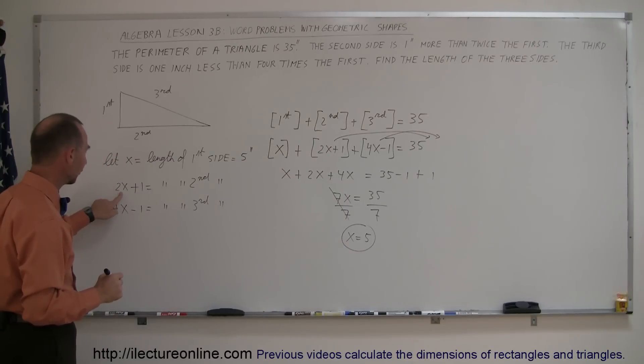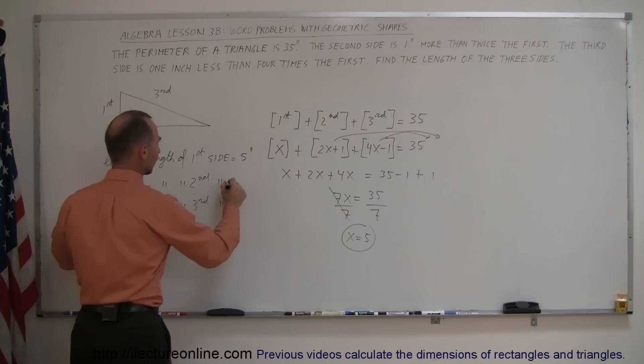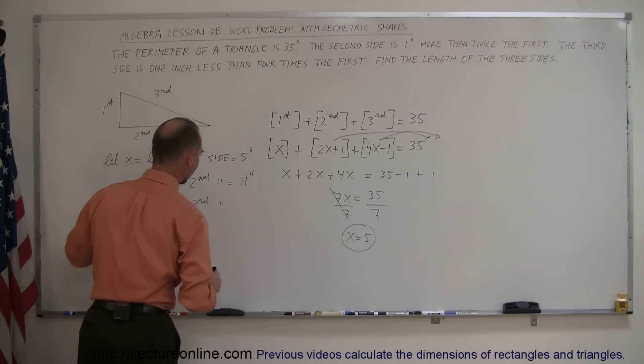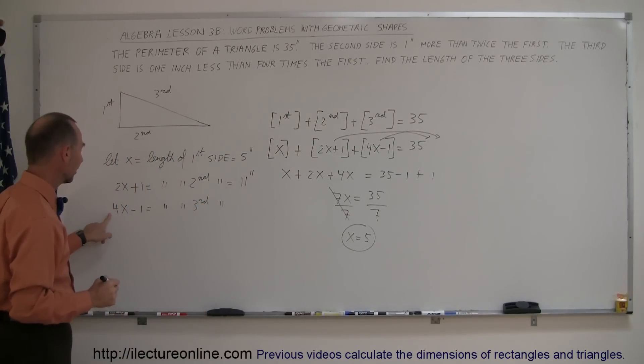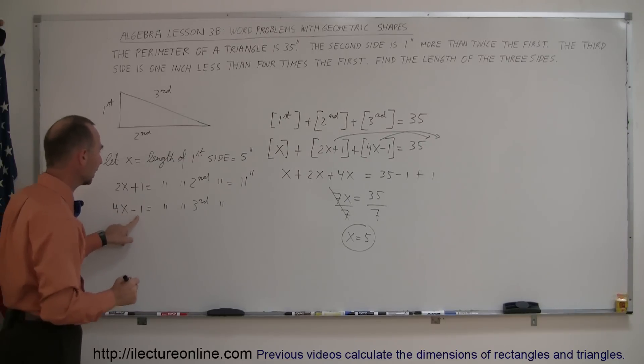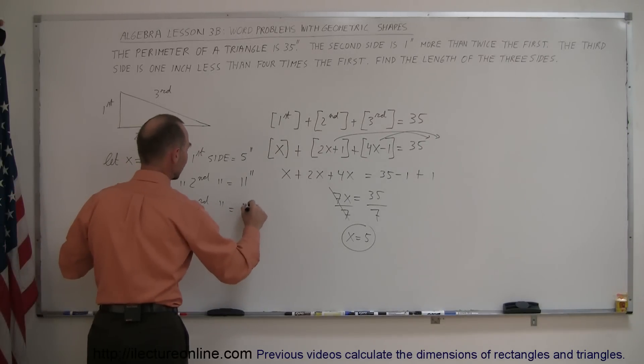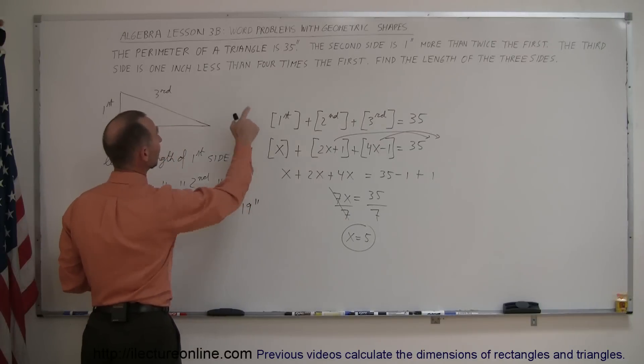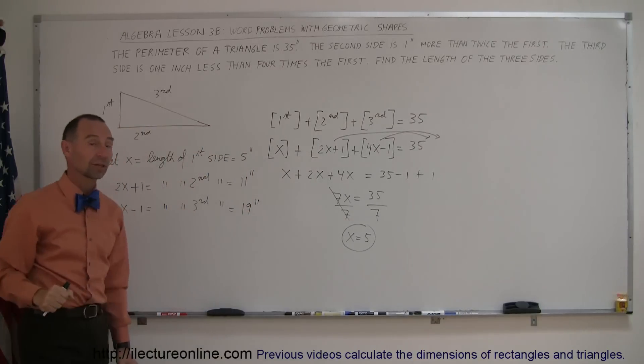The second side is twice the first side plus 1, so 2 times 5 is 10, plus 1 is 11, so that would be 11 inches. And then finally the third side, that says that 4 times the first side, that's 4 times 5, which is 20, minus 1, which is 19, is the length of the third side. So if we add these together, we do get 35, which looks like it's right.